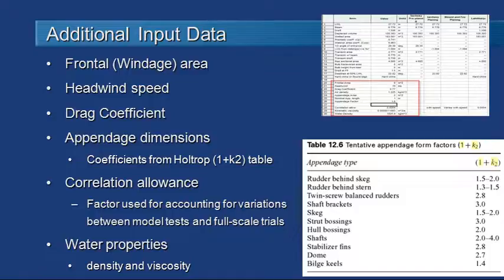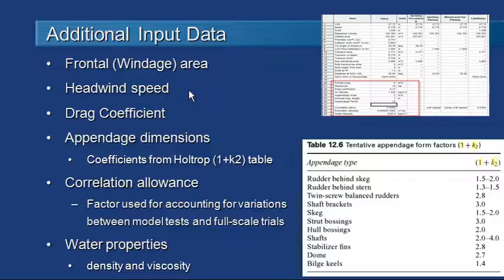There are a couple of extra things we may want to consider when it comes to resistance. We may want to consider aerodynamic resistance, and to do that we can enter in a frontal or windage area — that's just the cross-sectional area of the vessel above the waterline as seen from the front. If we want to take into account any headwind speed, we can add that in, and Hull Speed will adjust for the relative speed of the vessel automatically.